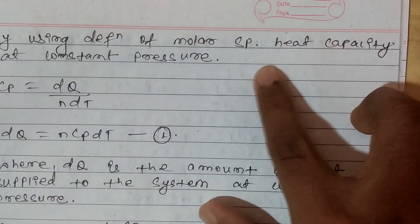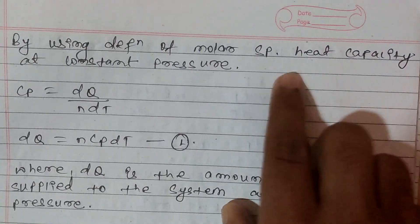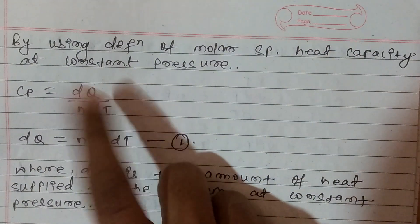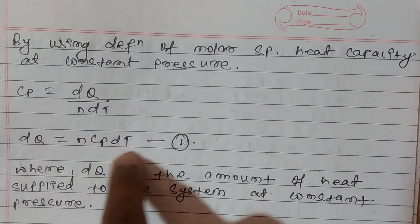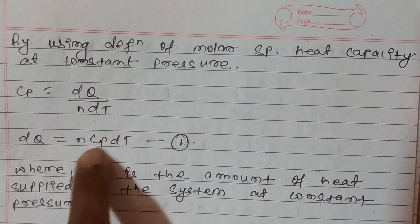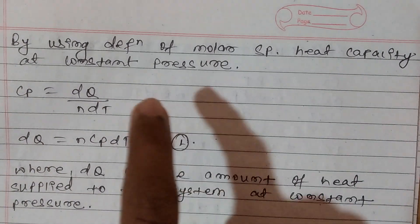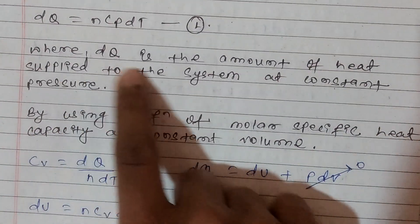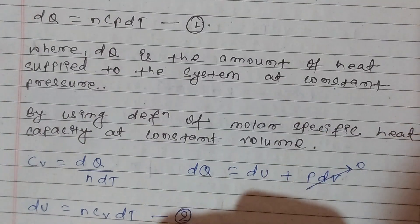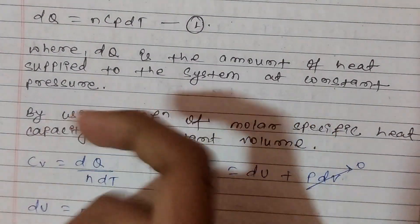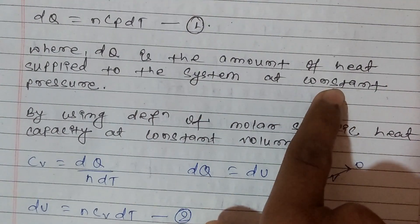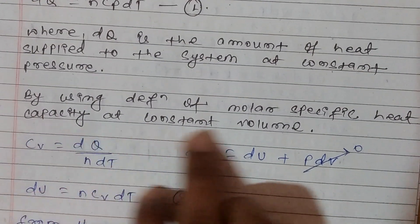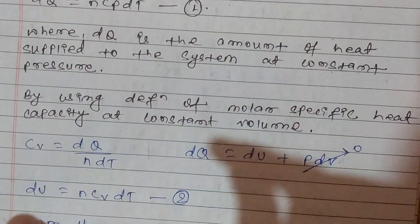By using the definition of molar specific heat capacity at constant pressure, CP is equal to DQ upon N DT. Then DQ is equal to N CP DT. This is the result relation. DQ is the amount of heat supplied to the system at constant pressure.